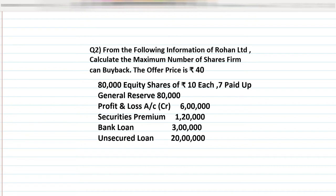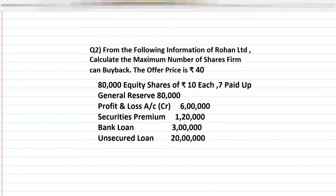For buyback purposes, we need to convert the partly paid up shares into fully paid up. So whenever we pass the general entries, we have to pass two extra entries: final call due and final call received. While calculating the buyback, we are going to take the fully paid up shares — this is a very important point.